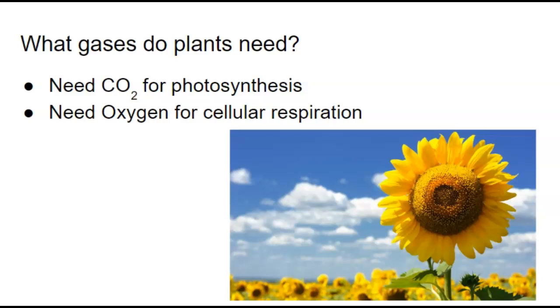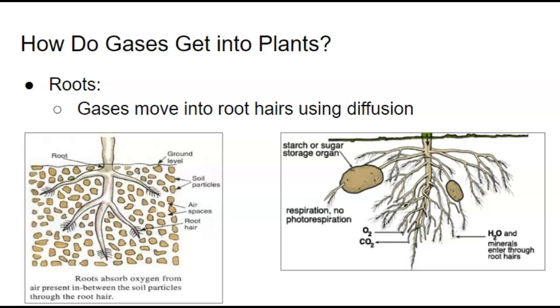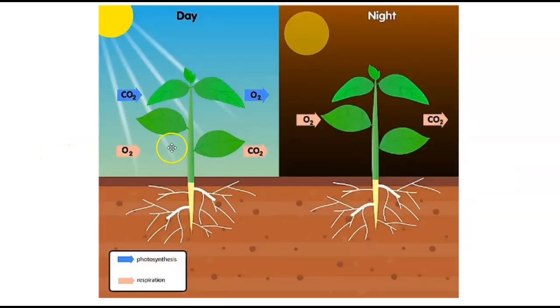Now we're going to take a look at how those gases get into the plant. So in our roots, the gases are going to move in using diffusion. So diffusion is moving from a high concentration to a low concentration. So think we have a lot of particles here and few inside the roots, they're going to move in. You'll notice in this picture I have mostly oxygen going in here and CO2 going out. If we take a peek back, oxygen going in, CO2 going out, that's for cellular respiration.